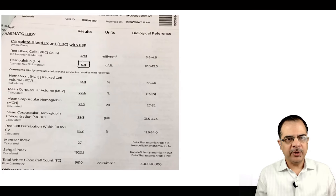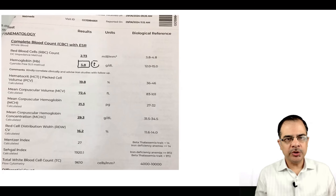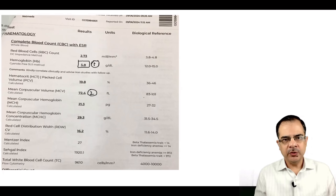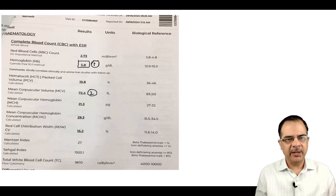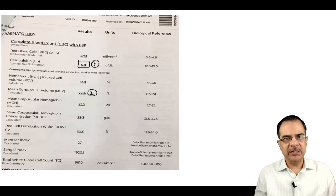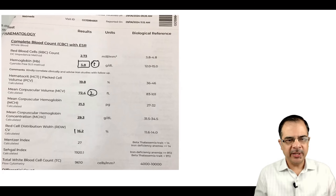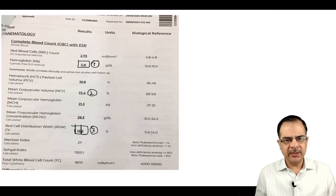Looking at the first patient profile: hemoglobin is 5.8 — clearly low. Step one: check hemoglobin; step two: check MCV. MCV is 72, which is low. With low MCV, we think iron deficiency or thalassemia. We check the RDW — it is 16.2, which is above the upper limit of 14 set by this lab, so RDW is high, favoring iron deficiency.